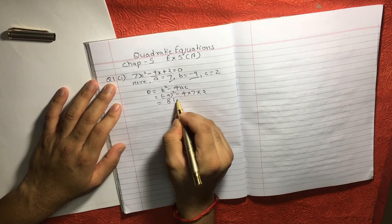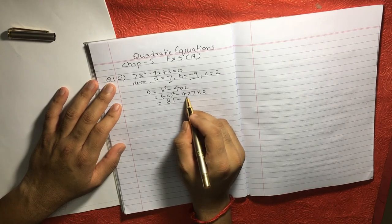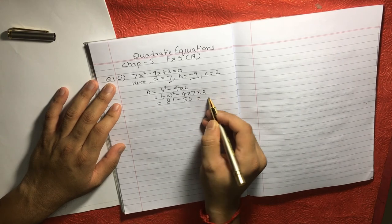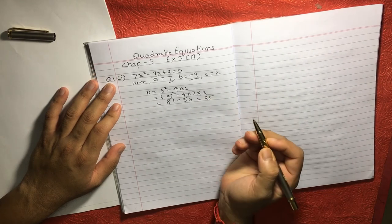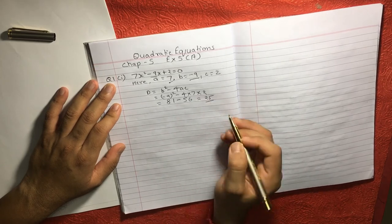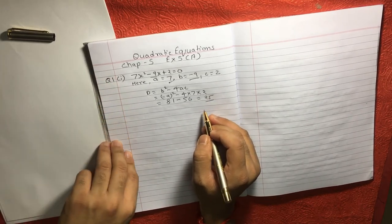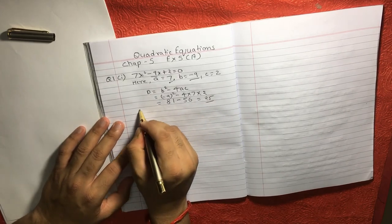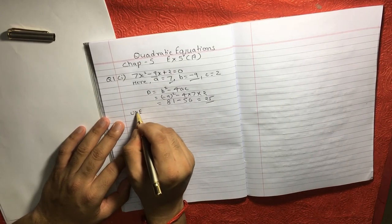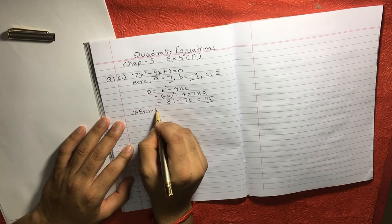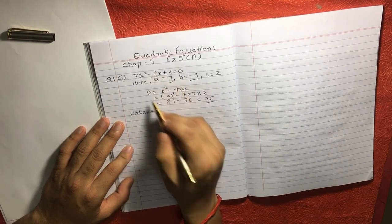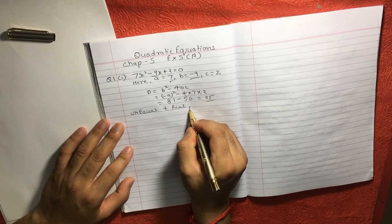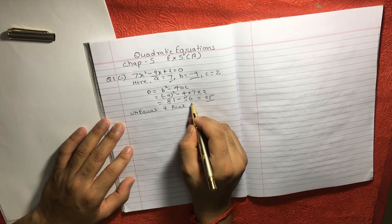And further, if you solve this will be 25. So in this case, we can see 25 is not equal to 0. That means this root is unequal. And since these are the numbers, so this will be of course real. You can also say this is also a perfect square.